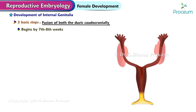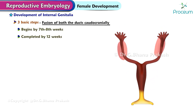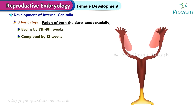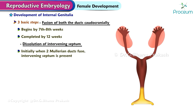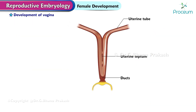Fusion of both ducts caudocranially begins by seven to eight weeks and is completed by 12 weeks. Dissolution of the intervening septum: initially when the two Müllerian ducts fuse, an intervening septum is present, but later by the fifth month of intrauterine life it also disappears.